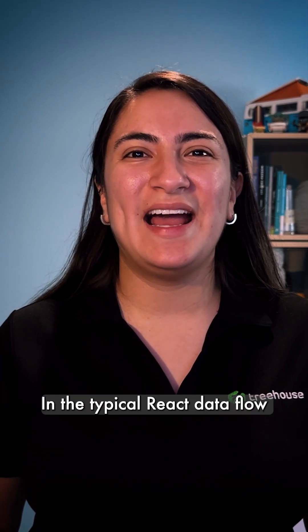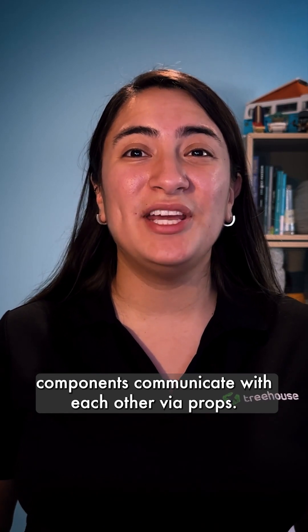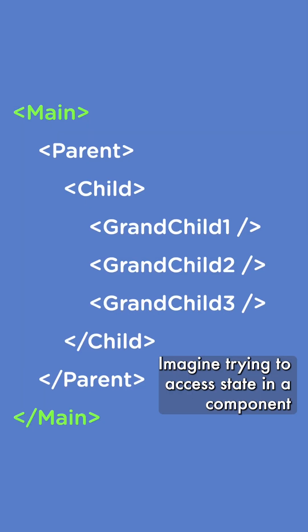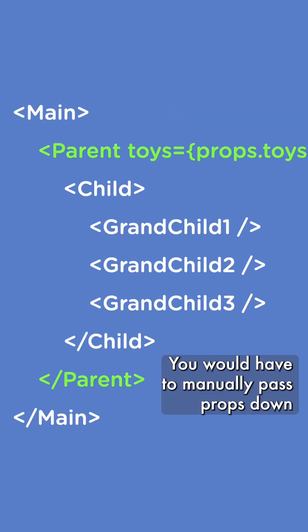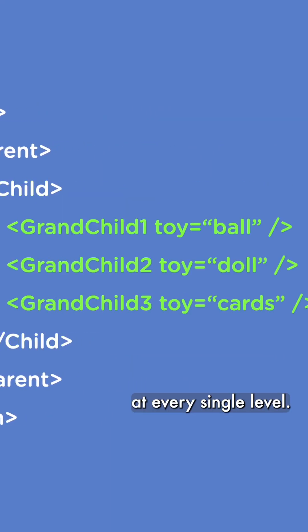In the typical React data flow, components communicate with each other via props. Imagine trying to access state in a component that's six or 10 levels deep. You would have to manually pass props down at every single level.